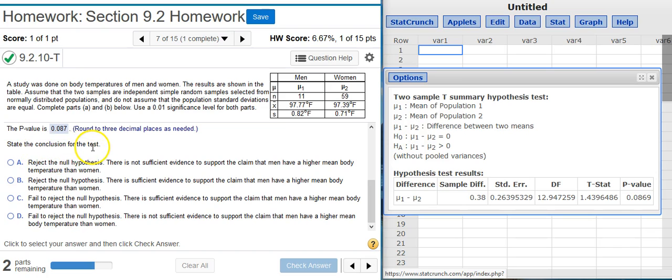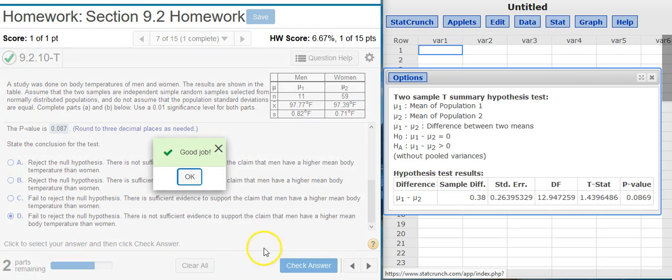Now we are asked to state the conclusion for the test. The simplest way to do that is compare the p-value with the significance level, alpha. We are asked to use a 1% significance level. Our p-value is 8.7%. And it is easy to see that 8.7% is greater than 1%. So therefore, the area of the p-value is larger than the area for the significance level. It cannot fit inside it because it is larger. Therefore, we are outside the region of rejection and we fail to reject the null hypothesis. Always when we fail to reject the null hypothesis, there is not sufficient evidence. So I select that answer option. Good job!